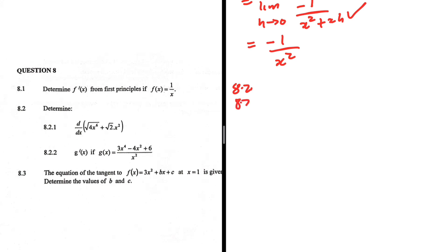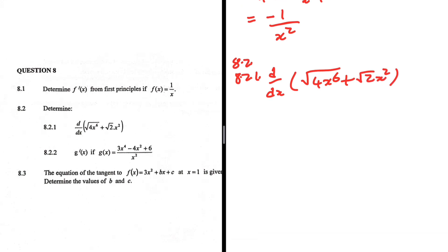So 8.2.1 specifically. We want to determine d/dx of the square root of 4x to the 6 plus the square root of 2x squared. First of all, let's simplify this and write it in a format that we're going to be able to differentiate. I'm still carrying that d/dx because I'm not differentiating yet — I just want to rewrite it in a better way. The square root is the same as the power of one half.